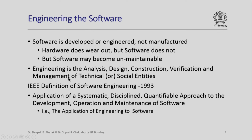IEEE, a US body with global presence, defined software engineering in 1993 as follows: application of a systematic, disciplined, quantifiable approach to the development, operation and maintenance of software is called software engineering. In short, this is nothing but the application of engineering to software.